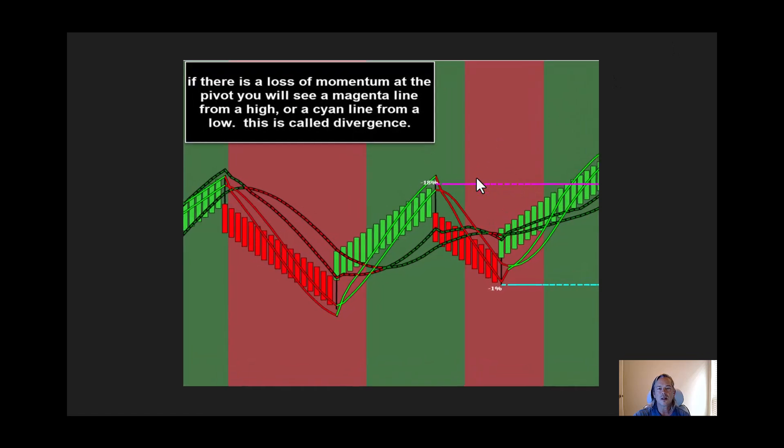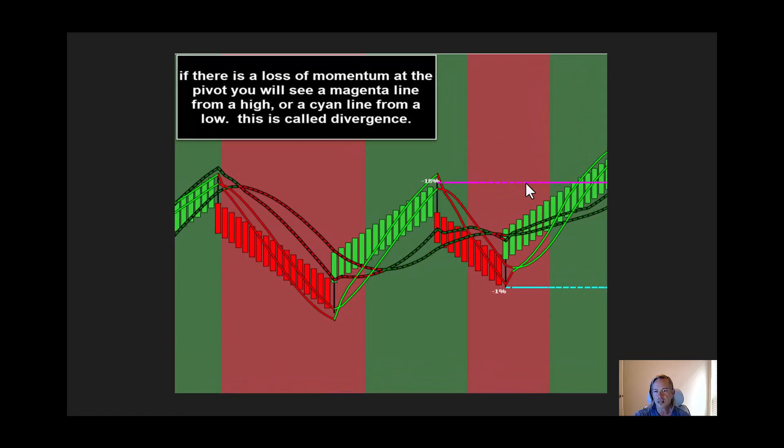If there is a loss of momentum at that pivot, you will see a magenta line from a high or a cyan line from a low. This is not a termination condition, this is not signs of a reversal, it's just a loss of momentum.